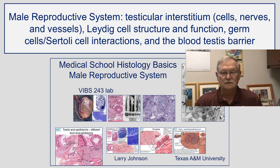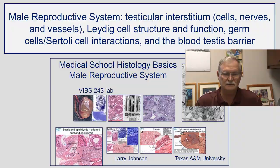The male reproductive system: testicular interstitium, that is the cells, nerves, and blood vessels and lymphatic vessels, the Leydig cell structure and function, Leydig cell germ cell interactions, and the blood-testis barrier.